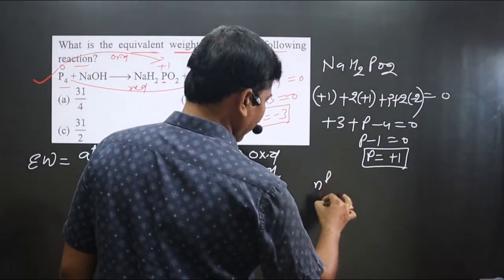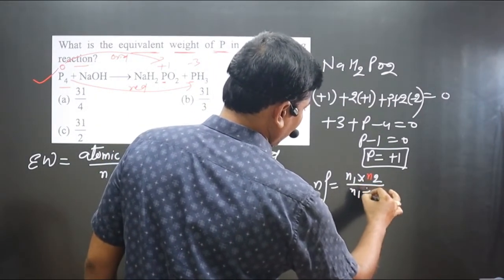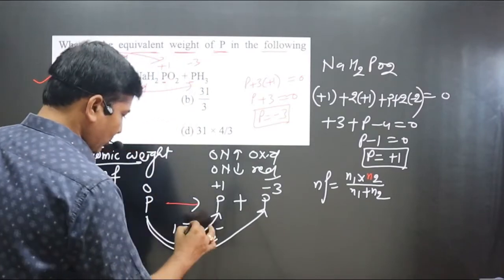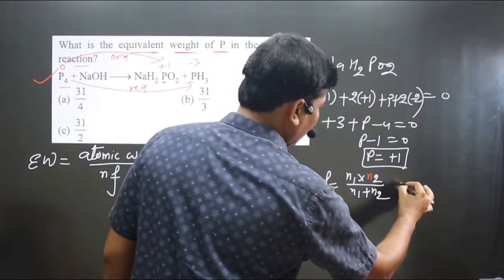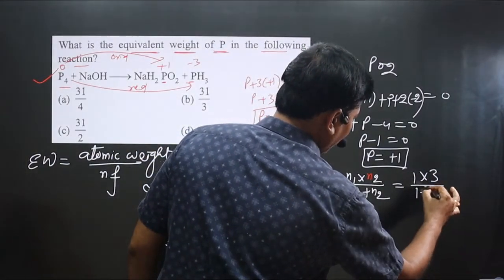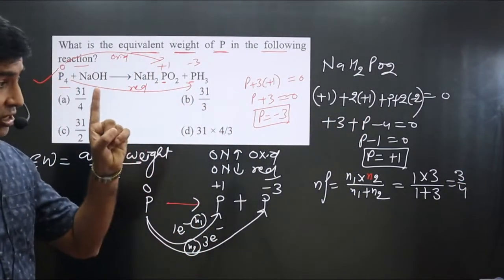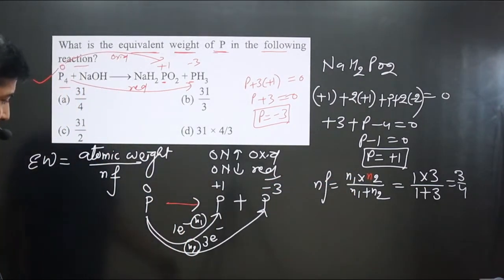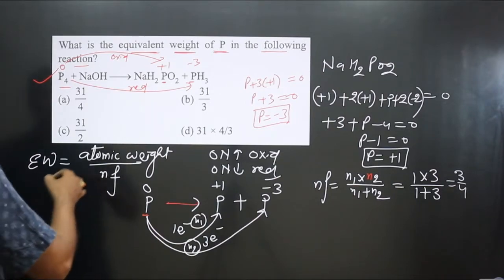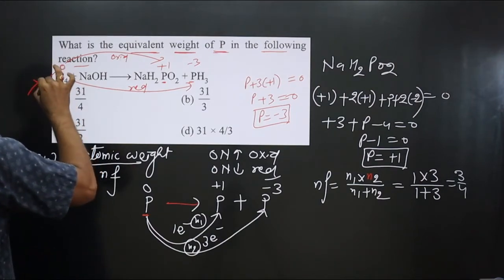For a disproportionation redox reaction, the n-factor formula is: n-factor = (n1 × n2) / (n1 + n2). Plugging in n1 = 1 and n2 = 3: n-factor = (1 × 3) / (1 + 3) = 3/4. This is for single phosphorus — not P₄.